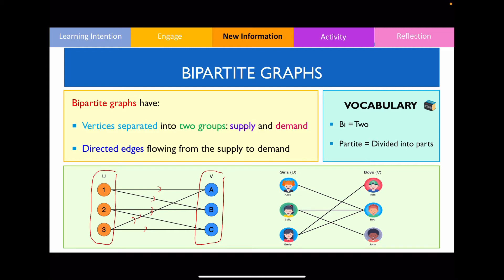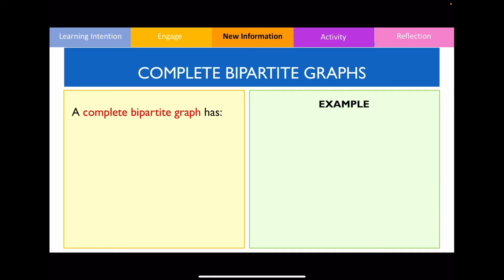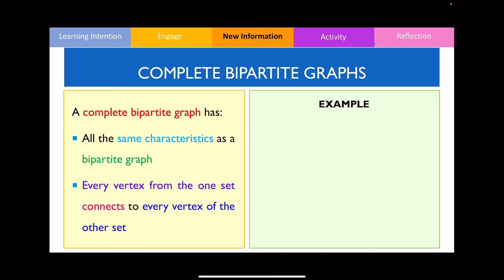Let's now talk about what a complete bipartite graph is. A complete bipartite graph has all the same features as a regular bipartite graph. However, every vertex on one side of the dataset will connect to all the vertices on the other side. For example, a factory with four employees and four different machines where every employee can use every machine.